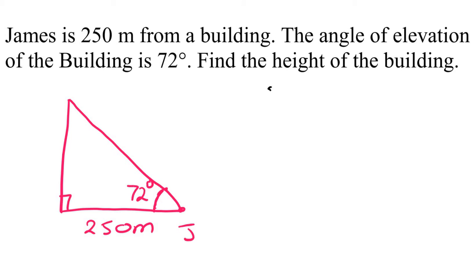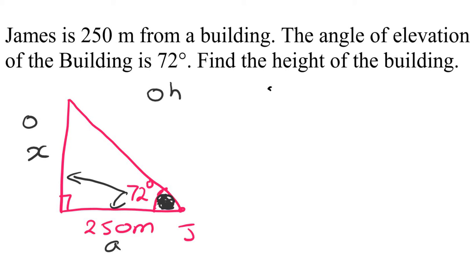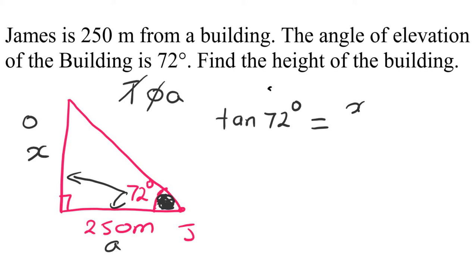The question says: what is the height of the building? So we put a letter x here for the height. To find x, this angle is given. X is actually opposite this angle, so we call it opposite. 250 is adjacent to this angle. So we have O and A, which means we use TOA — tangent. So tan of 72 degrees equals opposite over adjacent, which is x over 250.